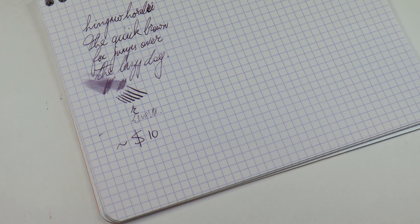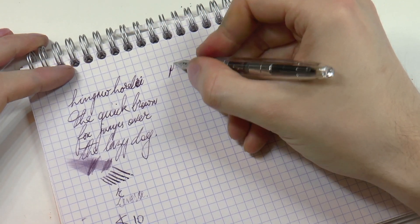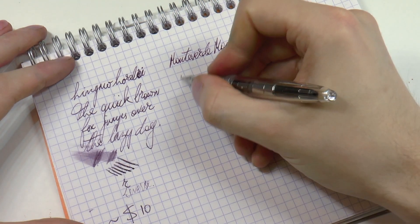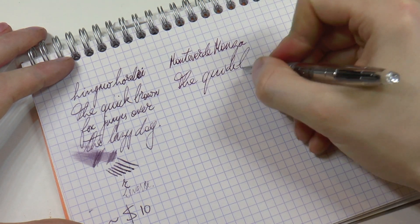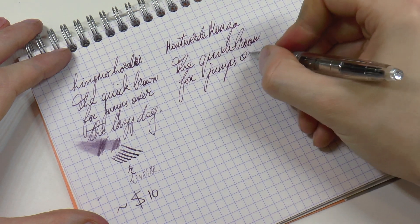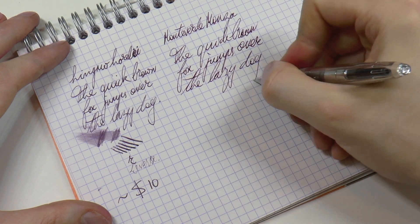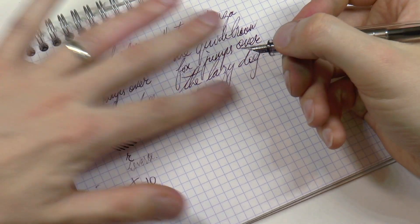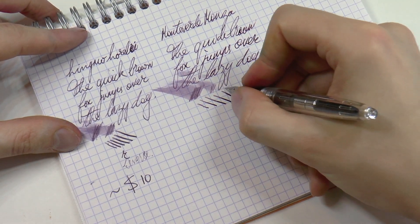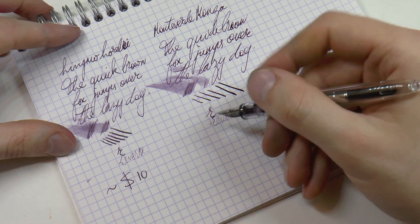Then we have the Monteverde Monza. I feel a little bit more feedback in this nib. I find it slightly - it's not really scratchy, but it is not as smooth as the Lorelei is. Still a pretty wet writer. Line variation - definitely is some. And reverse writing is scratchier.